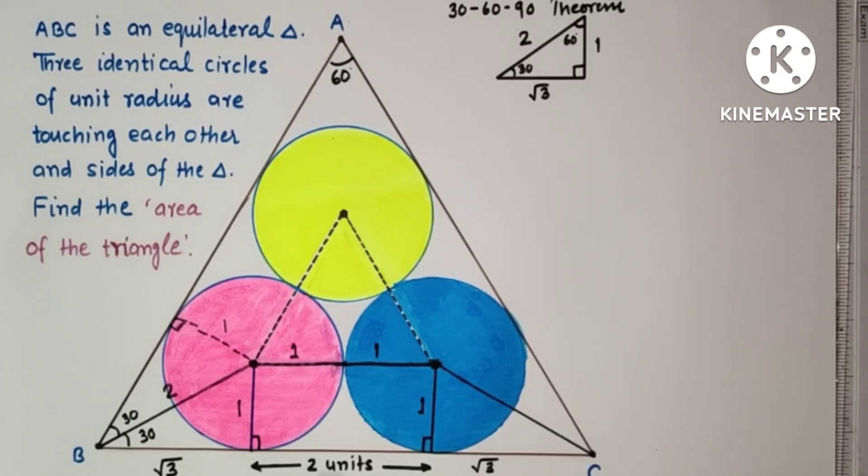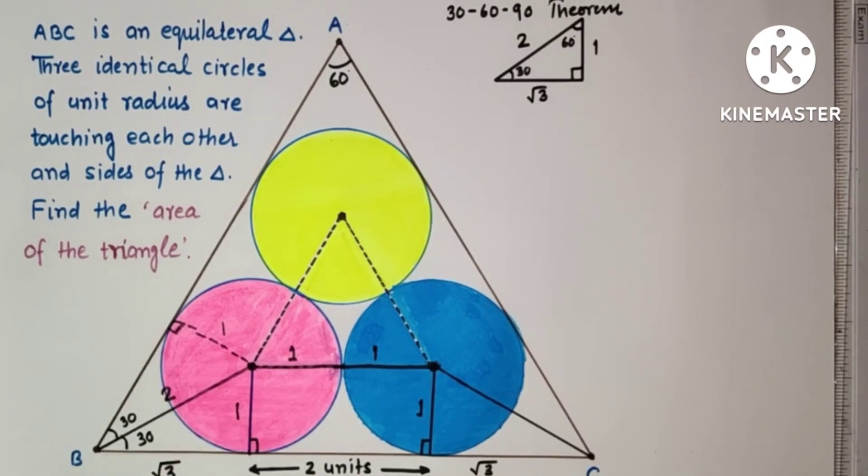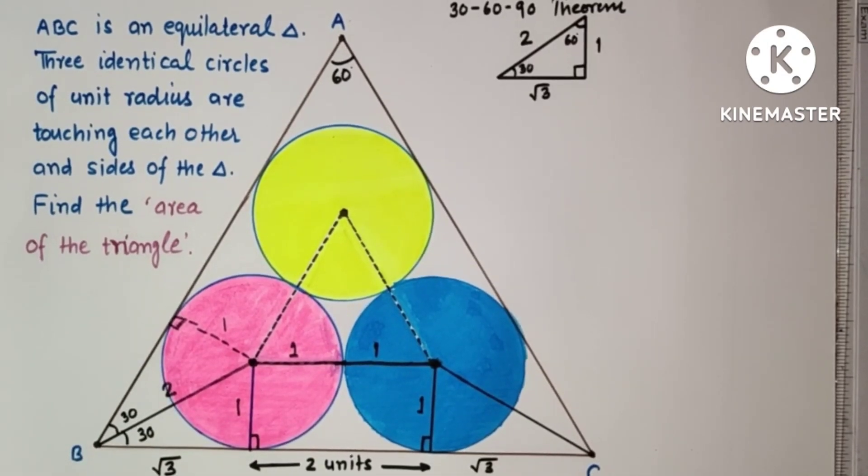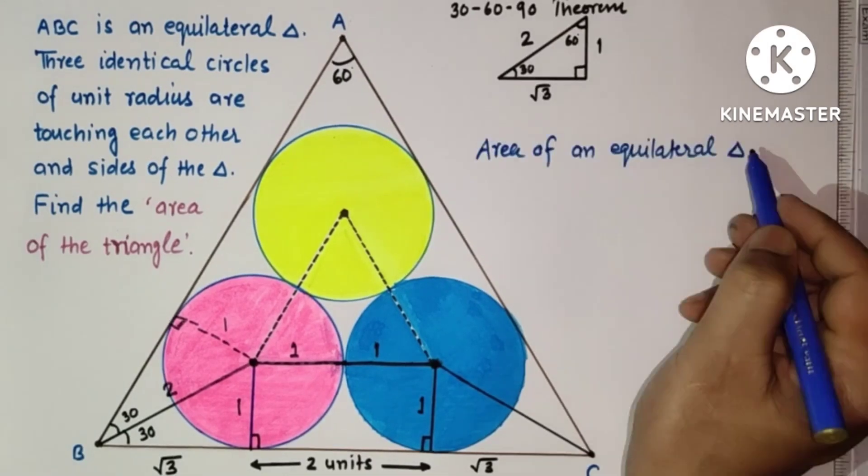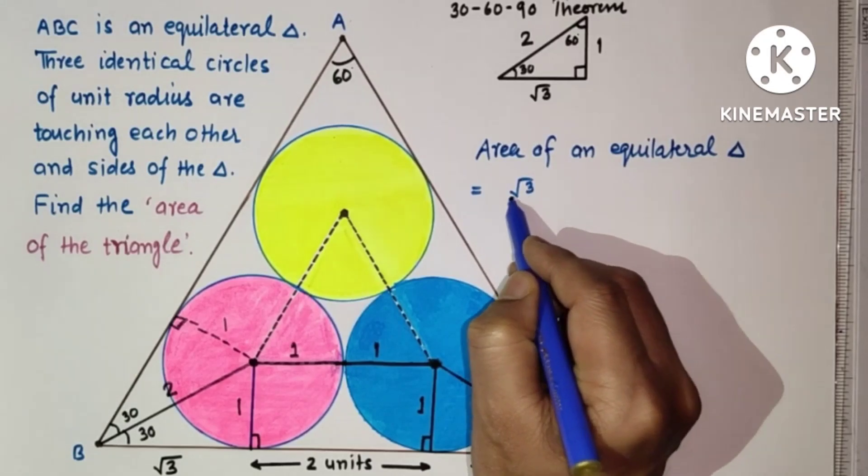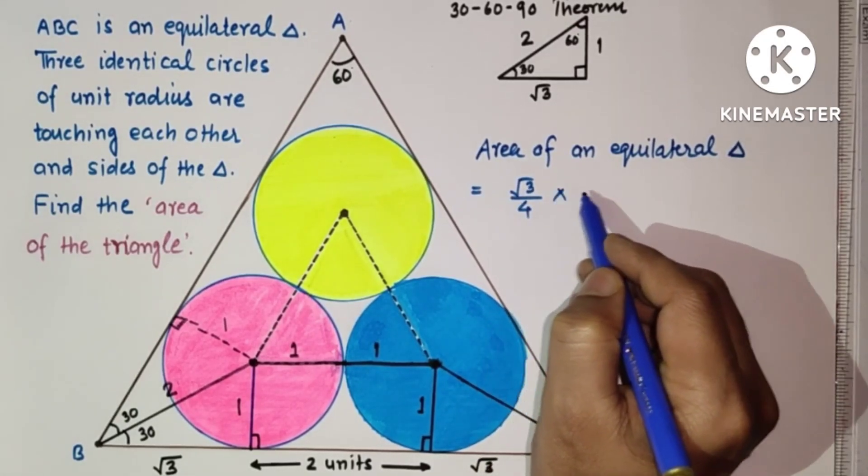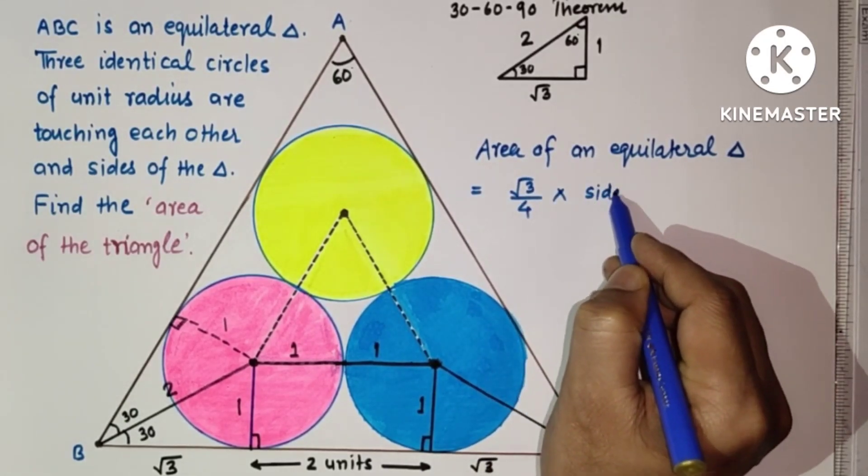Then this will also be root 3. Now we found this length. Since for equilateral triangle the three sides are equal, so we can use the formula for area of equilateral triangle is equal to root 3 by 4 into side length square.